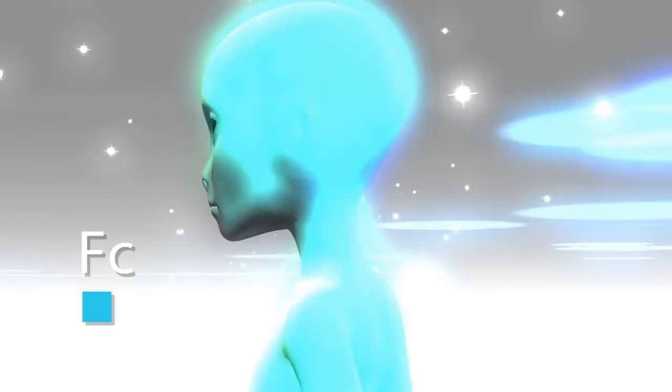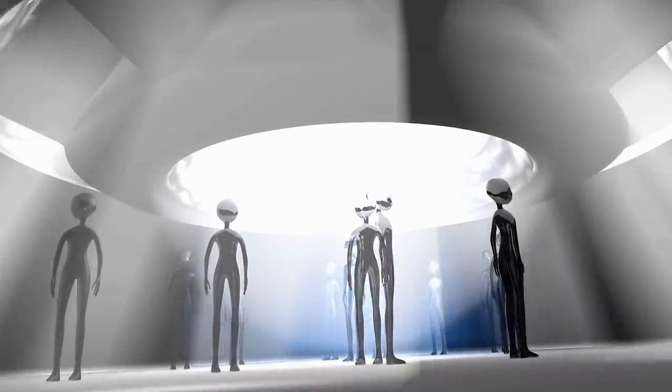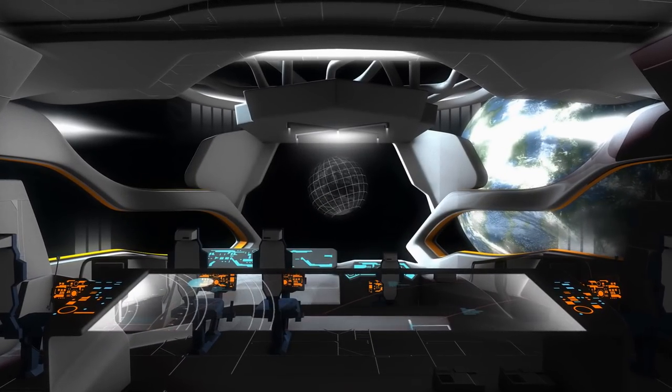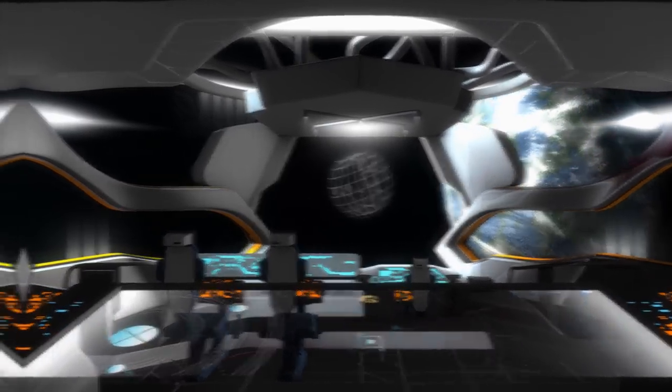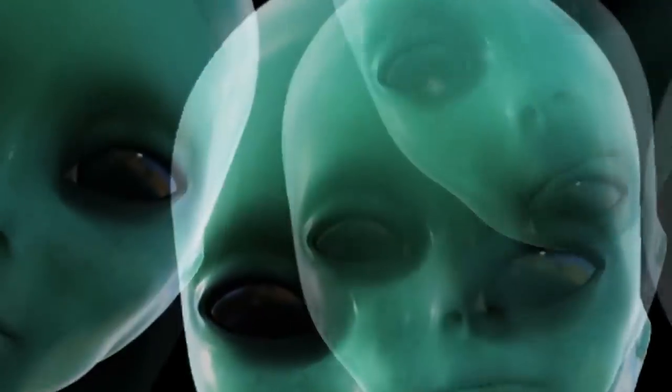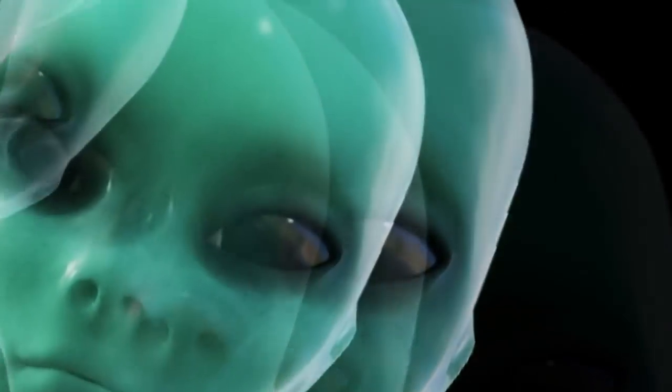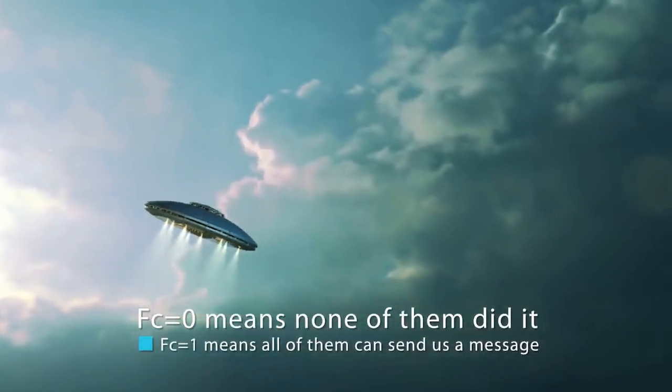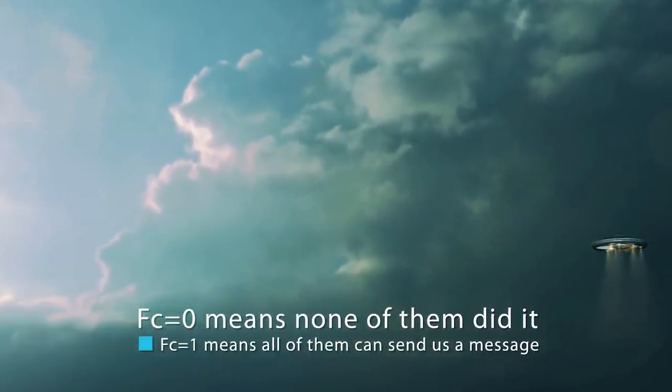Next one is FC. What is it? Well in order for extraterrestrial forms of life to communicate with us, it's not enough for them to just exist and be intelligent. They should also be able to send us messages. And to do that, they should have developed some advanced technologies. That's why we add FC. It represents the fraction of those intelligent civilizations that actually managed to develop a technology that allowed them to send us messages. Again the meaning is the usual one, FC equals 0 means none of them did while FC equals 1 means all of them are able to send us a message.